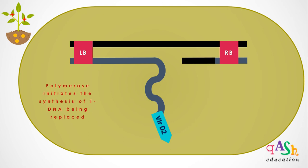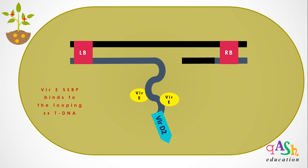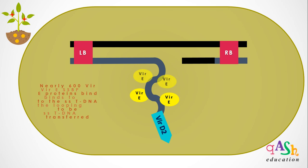As the VirD2 endonuclease continues to extract the single-stranded T-DNA copy, a polymerase enzyme initiates the synthesis of a new single-stranded T-DNA which will replace the one being pulled out for transfer. The single-stranded T-DNA copy being pulled out by VirD2 is then bound by multiple copies of VirE protein. VirE is a single-stranded DNA binding protein that protects it from the action of nucleases inside Agrobacterium as well as when it is transferred inside the plant cell. Nearly 600 copies of VirE proteins bind to the single-stranded T-DNA to be transferred.